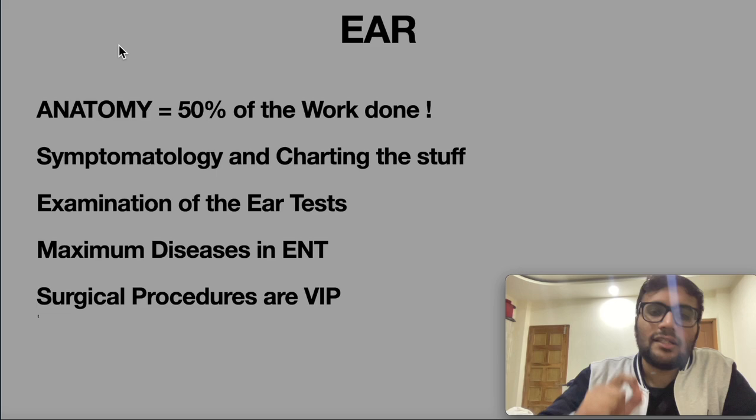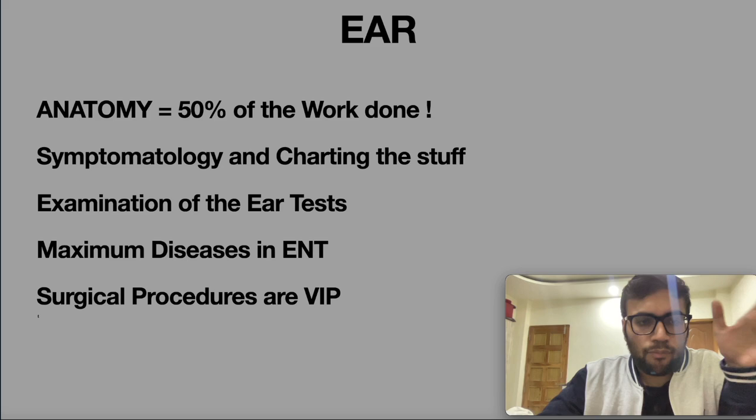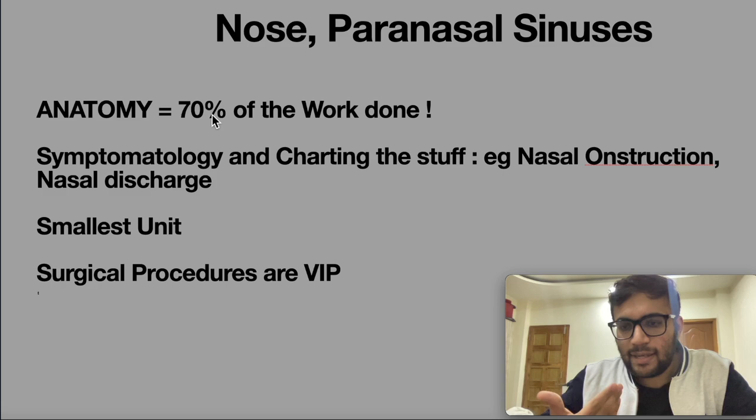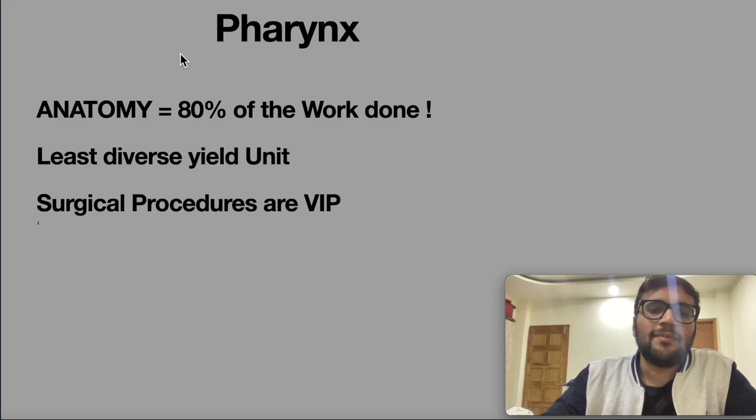For nose: again 70% anatomy. Symptomatology like nasal obstruction — make a chart for it. This is the smallest unit, so when you're bored you can finish it in 3–4 days. Surgical procedures like nasal septal procedures are frequently asked and you should know them. For pharynx: again anatomy, and this is the least diverse unit — there isn't much beyond tonsils. High-yield topics are limited, but surgical procedures like tonsillectomy — when to do it, in which patients — are very important.